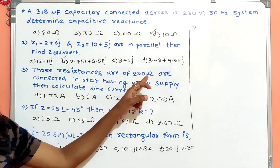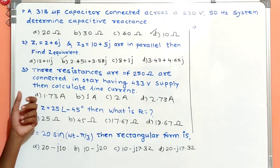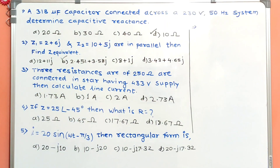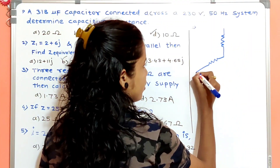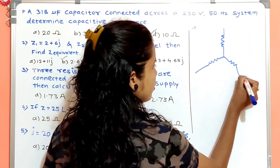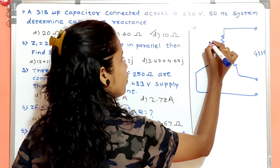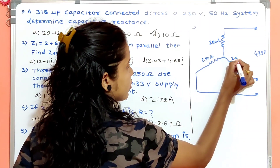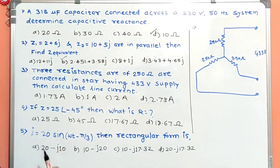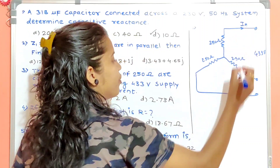Question three: three resistances of 250 ohm each are connected in star with a 4.33 volt supply. Calculate the line current. In a star connection, the applied voltage is 4.33 volt and each resistance is 250 ohm.